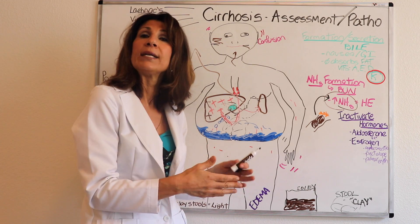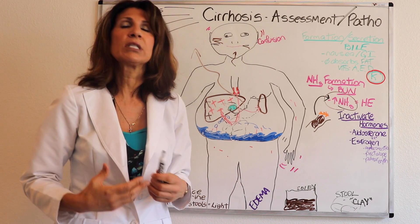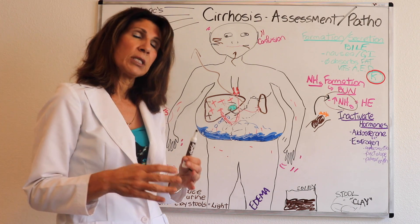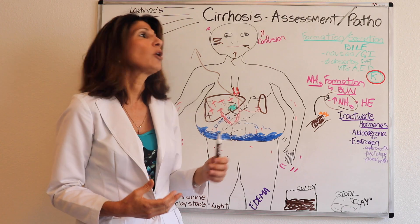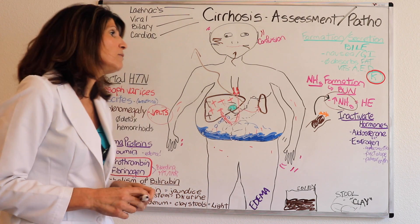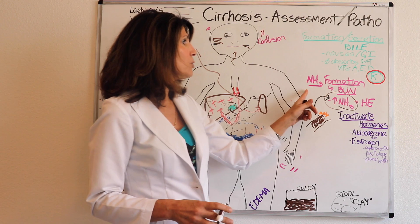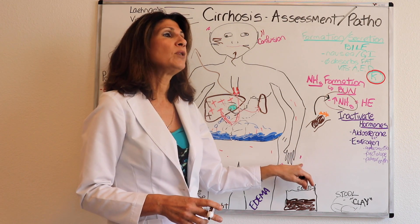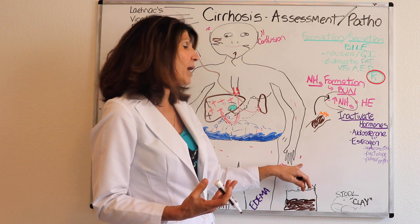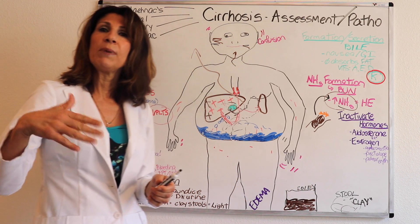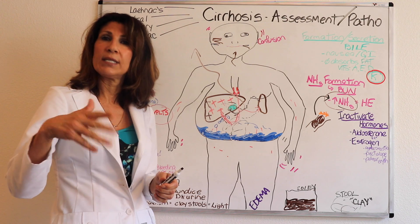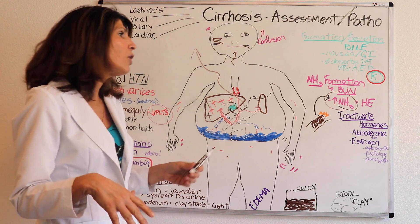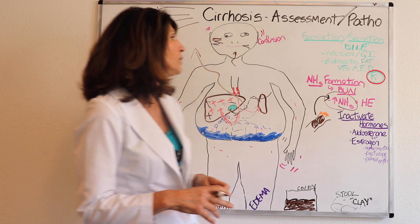The neurologic effects range from slight confusion to belligerence, combativeness, change in personality, somnolence, and sleepiness — the level of consciousness is greatly affected. Something else you can use to assess hepatic encephalopathy is asterixis, which is a flapping tremor of the hand that occurs as a result of elevated ammonia levels.